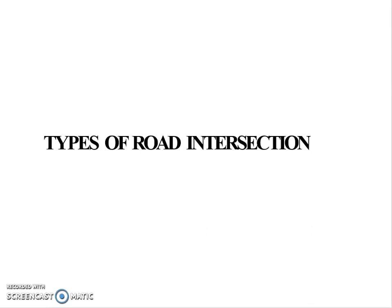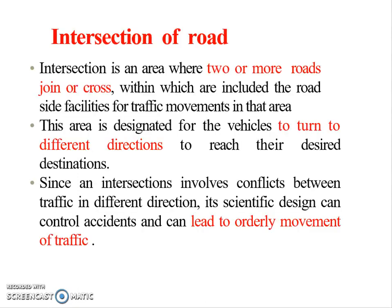Let's begin the first part of Module 5, which is types of road intersections. An intersection is an area where two or more roads join or cross, within which road-side facilities are included for traffic movements in that area.